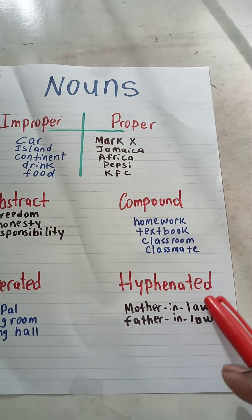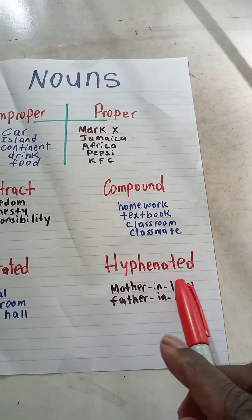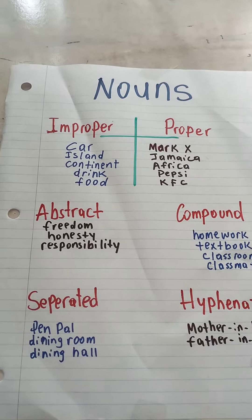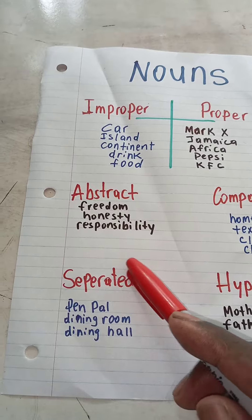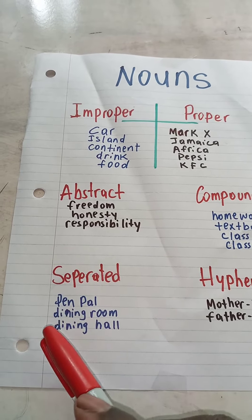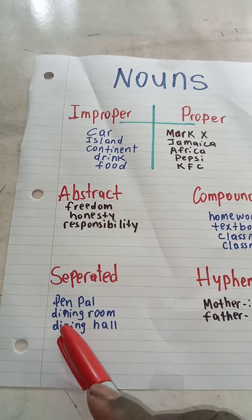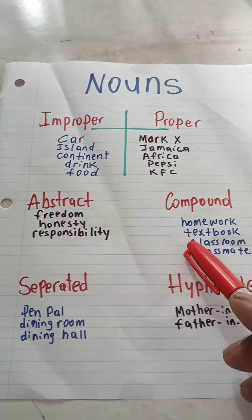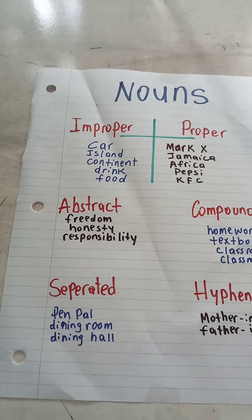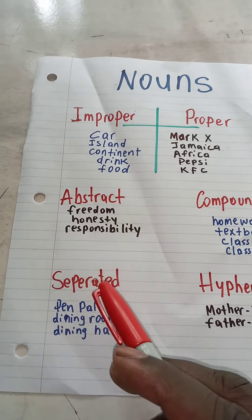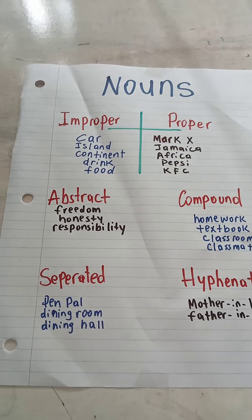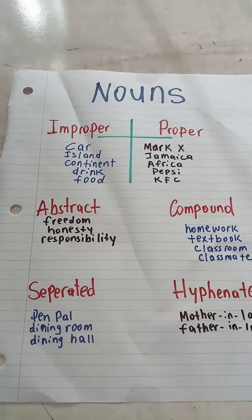Hyphenated nouns would be mother-in-law, father-in-law, sister-in-law, brother-in-law. And then there are separated nouns: pen pal, dining room, dining hall. They are not compounded or joined together — they are separated — but they are still nouns.